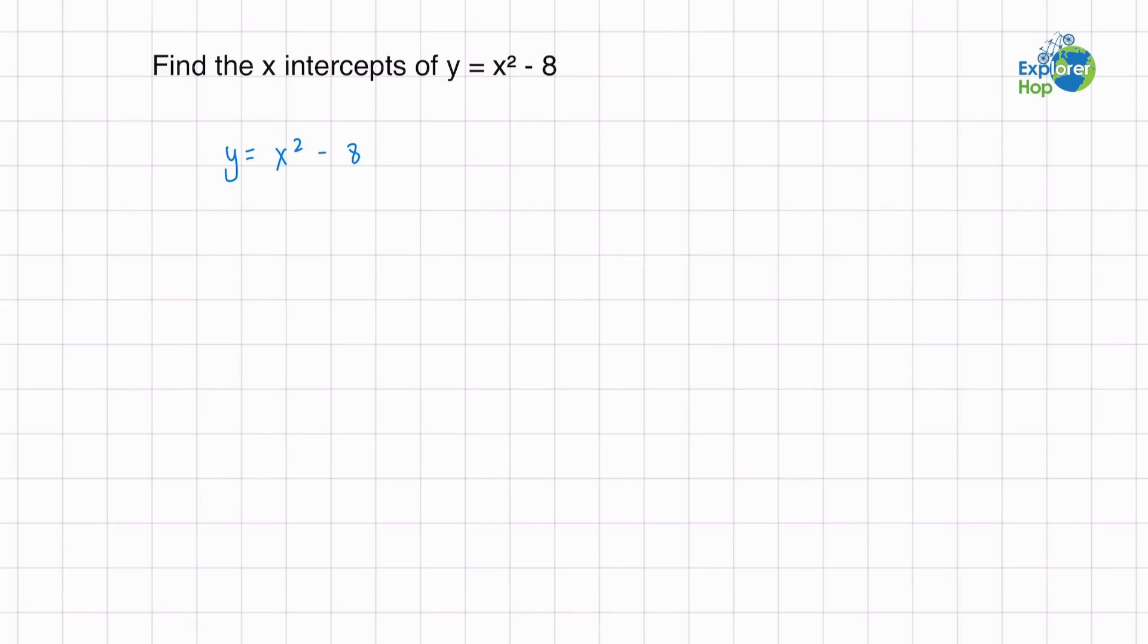So let's recall, what is an x-intercept? It is where the graph and the equation crosses the x-axis. So in order to find it, we set y equal to 0 and we solve for x.